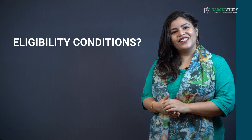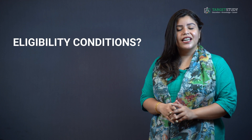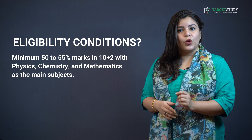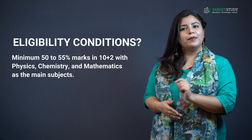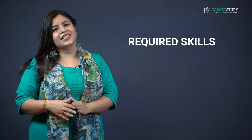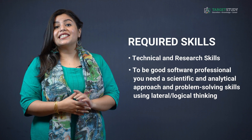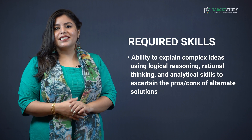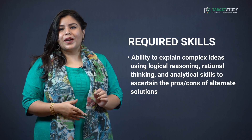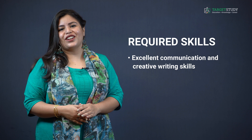Now, the eligibility conditions for a degree in Bachelor of Science in Information Technology: for getting admission in BSc IT, you must have completed your 10+2 or equivalent from a recognized board with 50% to 55% marks, with Physics, Chemistry and Mathematics as the main subjects. This condition of minimum marks may vary from institute to institute. Along with these eligibility conditions, you must have certain required skills: technical and research skills, a scientific and analytical approach, problem-solving skills using lateral or logical thinking, ability to explain complex ideas using logical reasoning, rational thinking and analytical skills, judgment and decision-making skills, and excellent communication and creative writing skills.